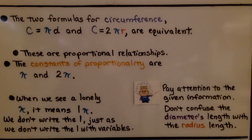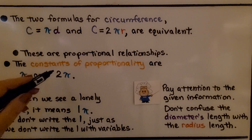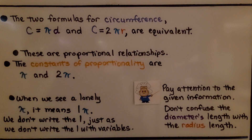So we write the 2 before the pi symbol: c is equal to 2πr. The two formulas for circumference are c equals πd and c equals 2πr. They're equivalent. These are proportional relationships. The constants of proportionality are π and 2π. Remember, when we see a lonely π, it means 1π — it's like an invisible 1 is there. We don't write the 1, just as we don't write the 1 with variables. Pay attention to the given information in a problem — don't confuse the diameter's length with the radius length. The diameter goes all the way across the center; the radius just goes halfway across.